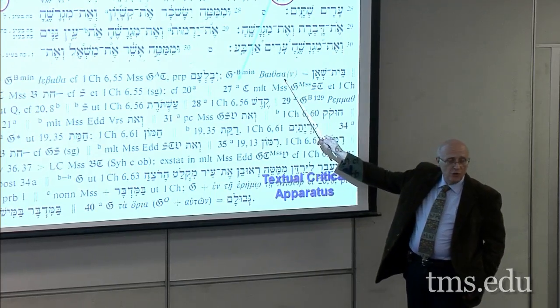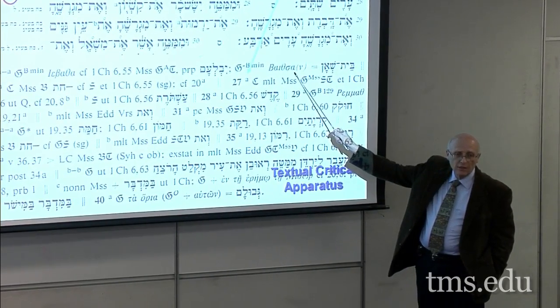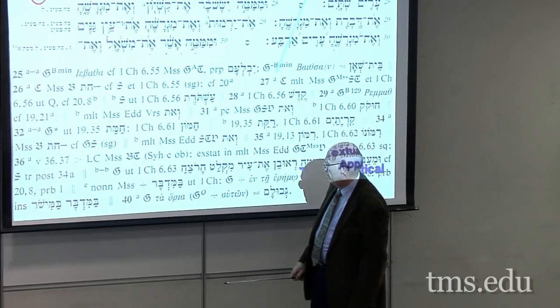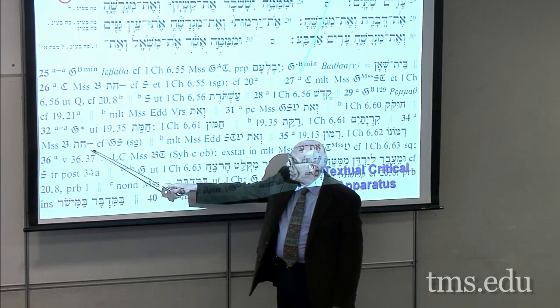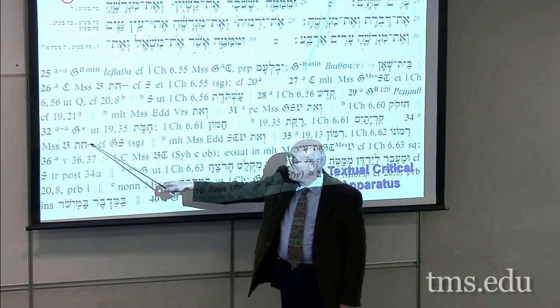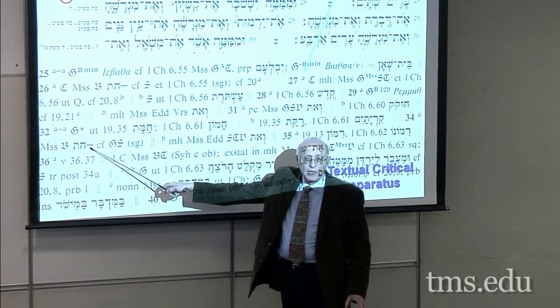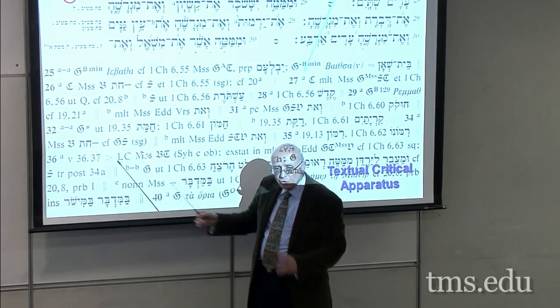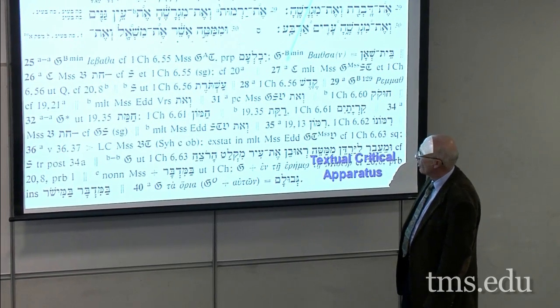For example, as we look at Joshua chapter 21 and look at the textual critical apparatus, you see Greek here. When you have Greek, do not translate it — just copy it. When you have items like this in Hebrew indicating things like suffixes, copy it. You might not be able to explain what it's about, but just copy it and put it in that column of notes and into the meaning column.